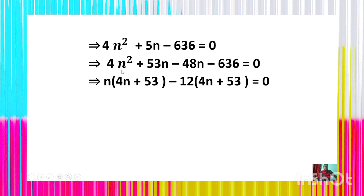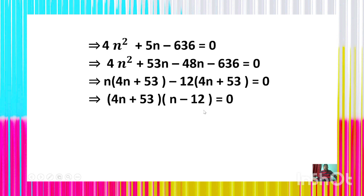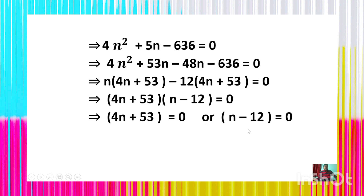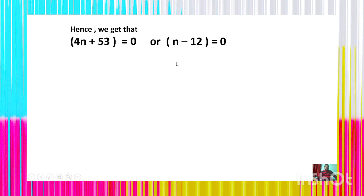Taking n as a common factor from the first two terms: n(4n + 53). Taking −12 as a common factor from the last two terms: −12(4n + 53) = 0. Thus (4n + 53)(n − 12) = 0. So either 4n + 53 = 0 or n − 12 = 0.